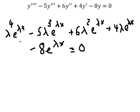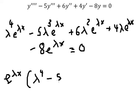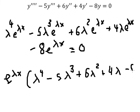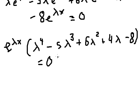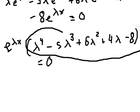So we have e to the power of lambda x that we can factor out. After factorization we need to find the solution of this characteristic polynomial.